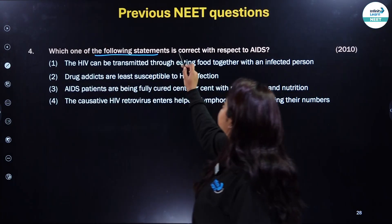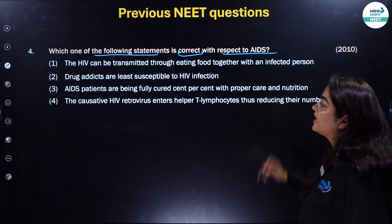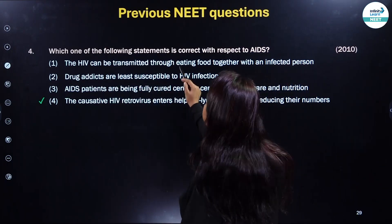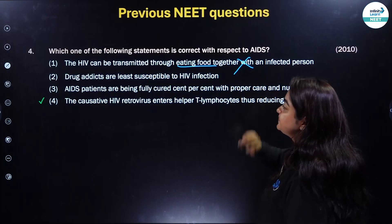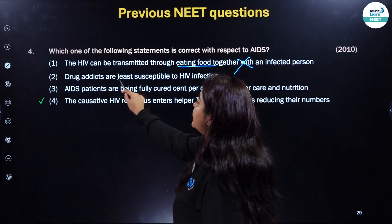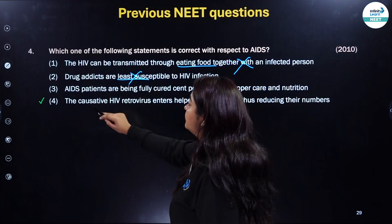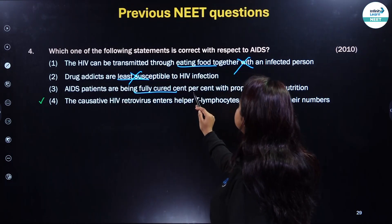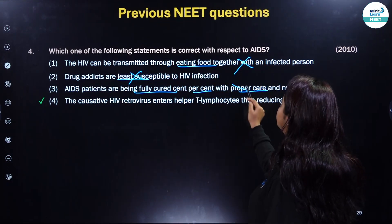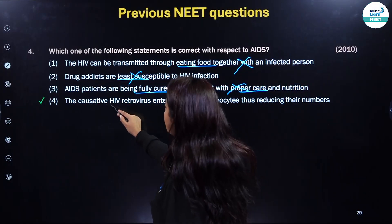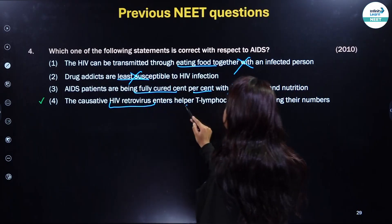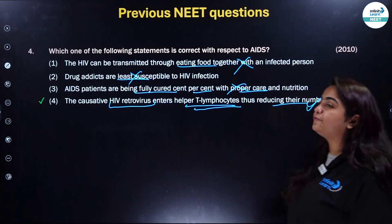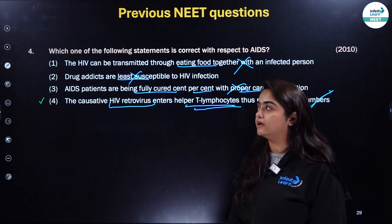Which of the following statements is correct with respect to AIDS? HIV can be transmitted through eating food together — no. Drug addicts are least susceptible — no. AIDS patients are being fully cured with proper care and nutrition — not possible. The causative HIV retrovirus enters helper T lymphocytes, thus reducing their numbers — yes. Only the fourth statement, the last one, is correct.